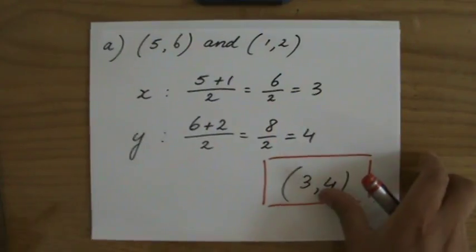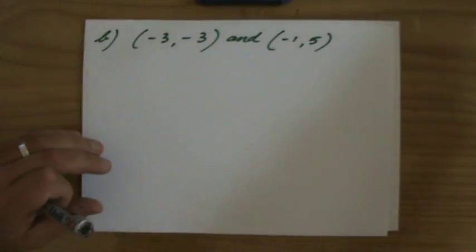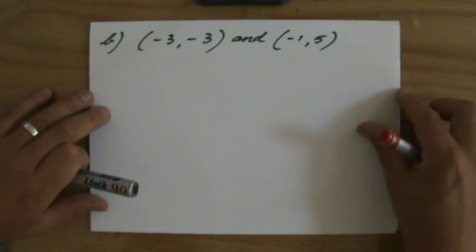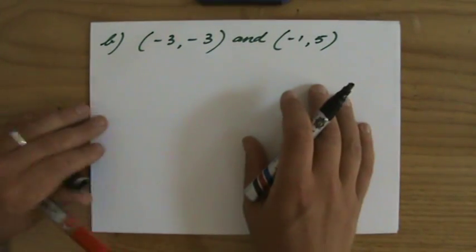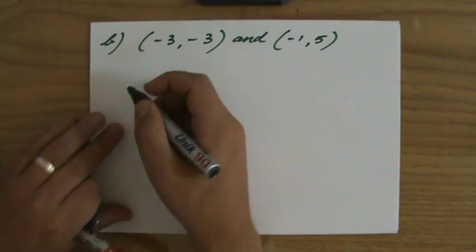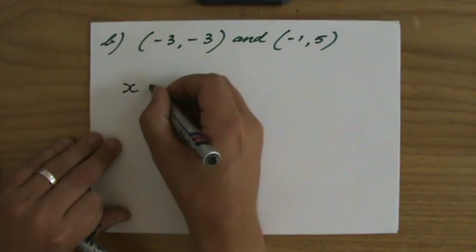Now the second question, so the same question only two different coordinates: (-3,-3) and (-1,5). And I will calculate it first and I will show you graphically that I'm right. Okay, so the x-coordinate is...